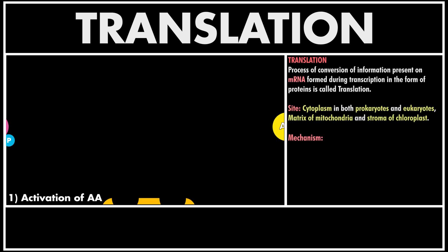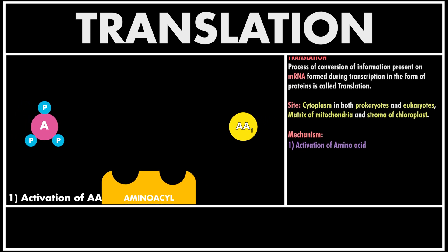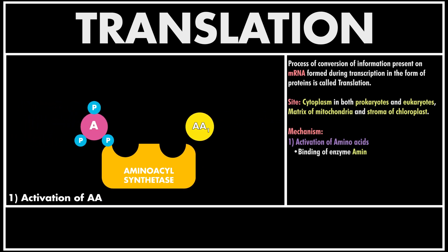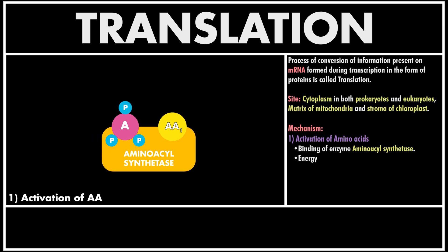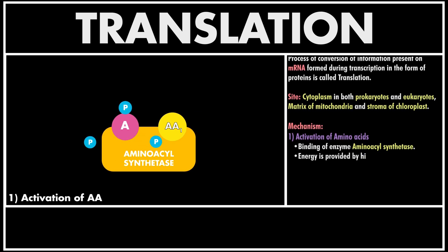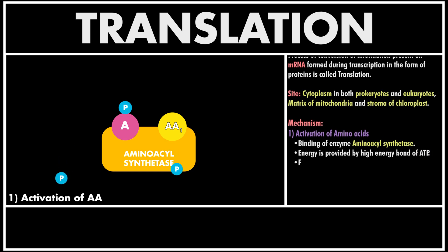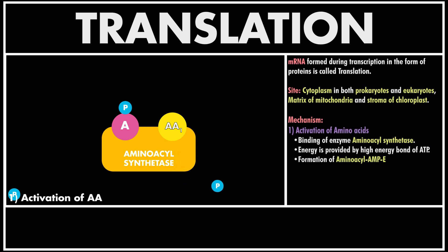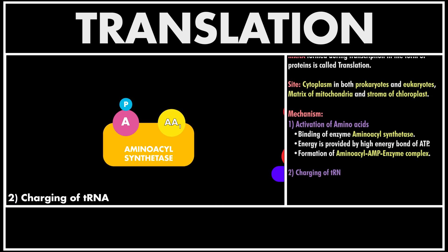Now let's see the mechanism of translation, which is divided into five main steps. The first step is binding of an amino acid with the enzyme aminoacyl synthetase, which leads to formation of aminoacyl-AMP enzyme complex. The energy for this step is acquired by breaking of high energy bonds of ATP. This step is called activation of amino acids.